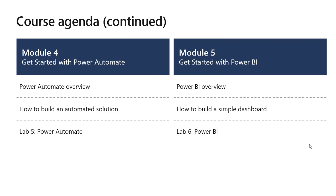In Module 4, you will learn about the capabilities of Power Automate. You will learn the different types of workflows you can create in Microsoft Flow, how Power Automate uses connectors to connect to different data sources, how to use conditions including switch, do until, and apply to each, how to use expressions, and how to build an end-to-end flow and troubleshoot it.